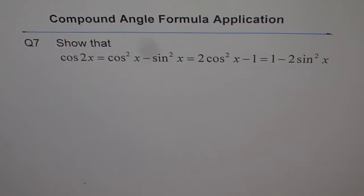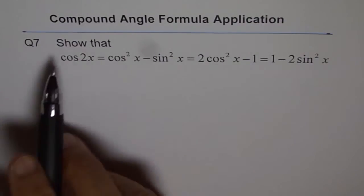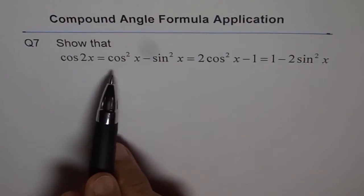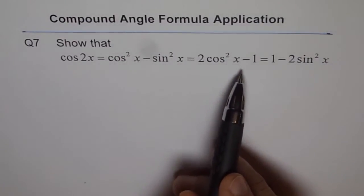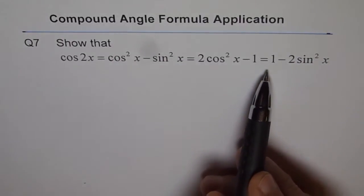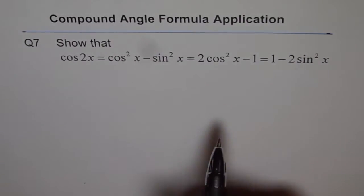Compound angle formula application, question 7. Show that cos 2x equals cos square x minus sin square x, which equals 2 cos square x minus 1, and that equals 1 minus 2 sin square x.